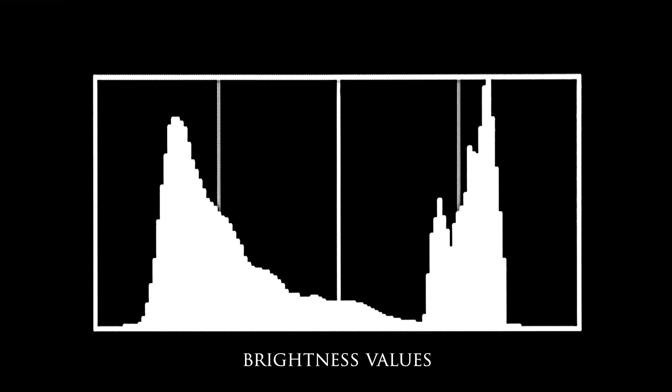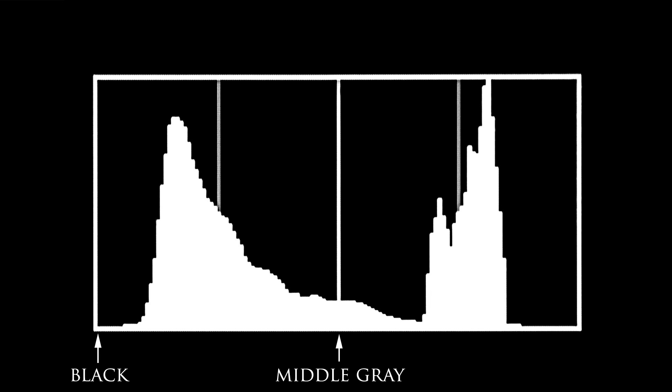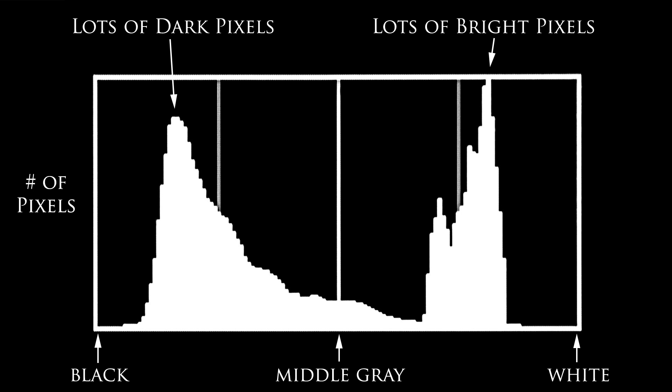Let's take a closer look. The horizontal axis of the histogram shows all the brightness values possible in your photo — from pure black all the way on the left, to middle gray in the dead center, to pure white on the far right. And the vertical axis of your histogram represents how many pixels in your photo have that particular brightness value. In other words, the more pixels you have at a certain brightness, the bigger the corresponding spike on the histogram will be.